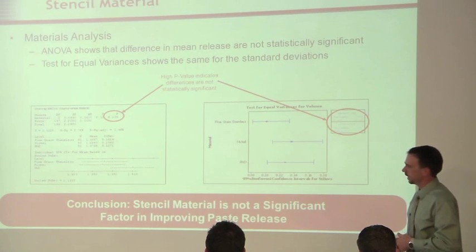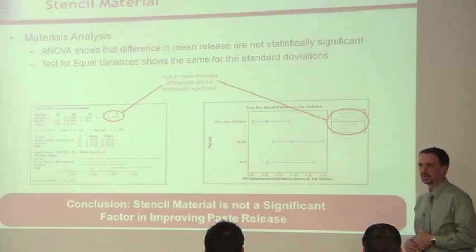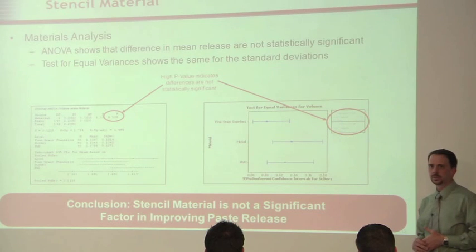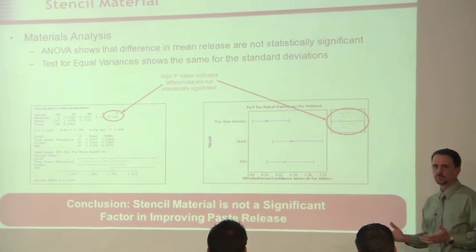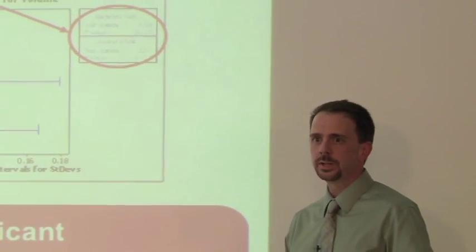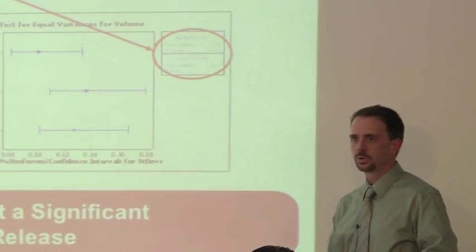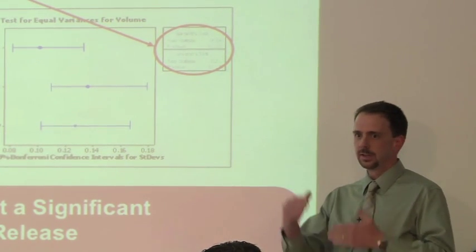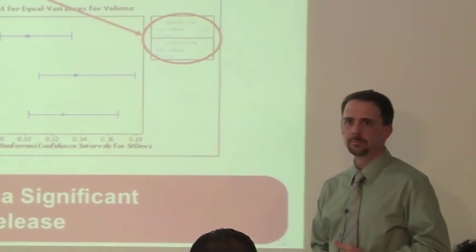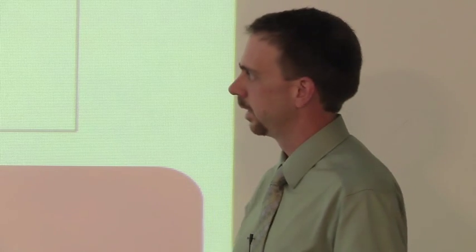The same thing for the variance — we saw the bigger box size for the nickel material. It was kind of surprising to us, but once we did the statistical analysis, we get a p-value that's over 0.1, well over our threshold. So we can't say statistically that bigger variation for the nickel material was significant. There's nothing in this data that tells us that any of those materials are any better than the others. We really expected the nickel material to perform better than the others, and we just didn't see that.